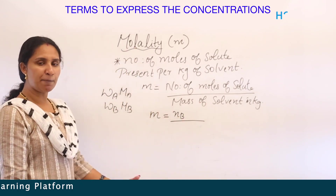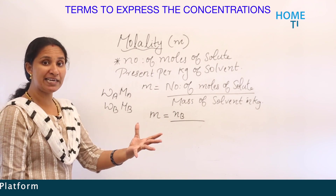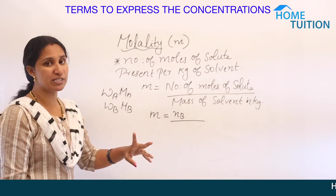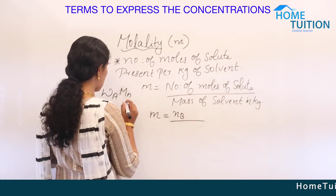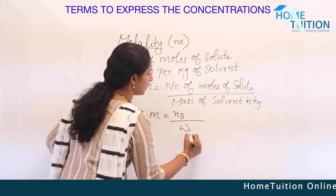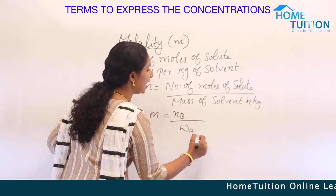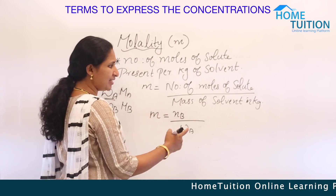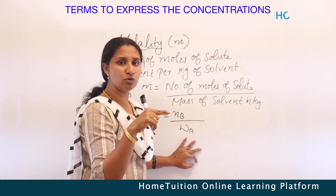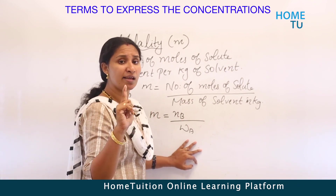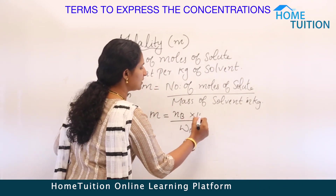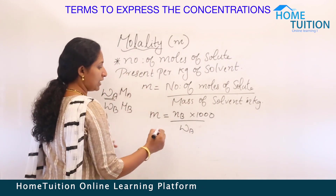If the solvent mass is given in grams, divide by 1000 to convert to kilograms. So the mass of solvent becomes WA divided by 1000. That 1000 moves to the numerator, and NB equals WB by MB.